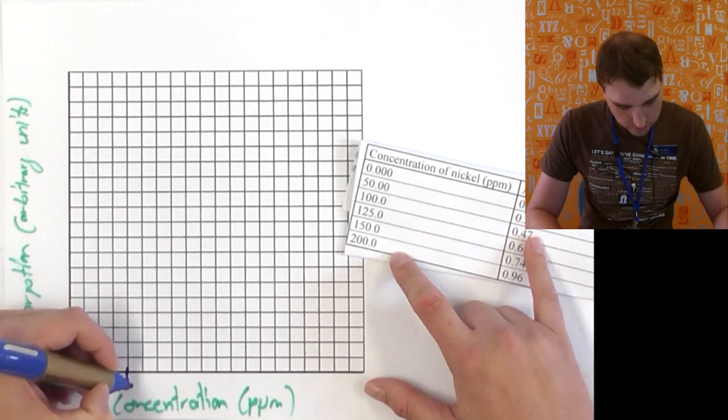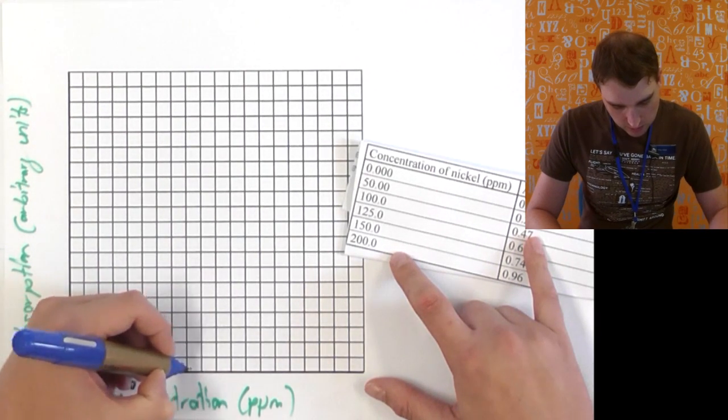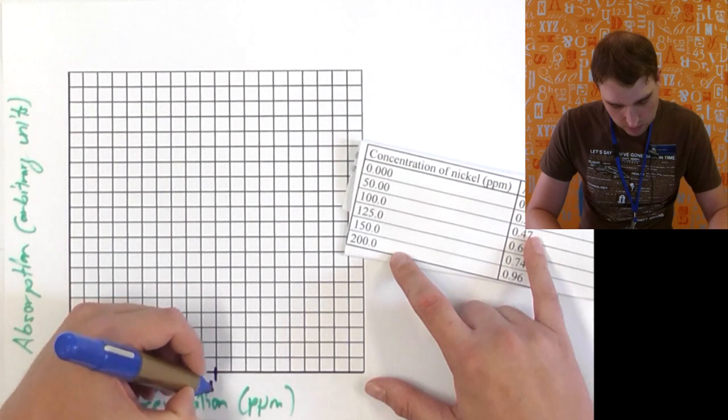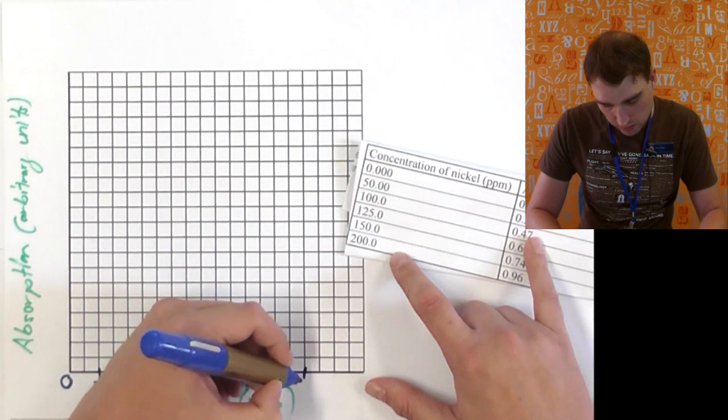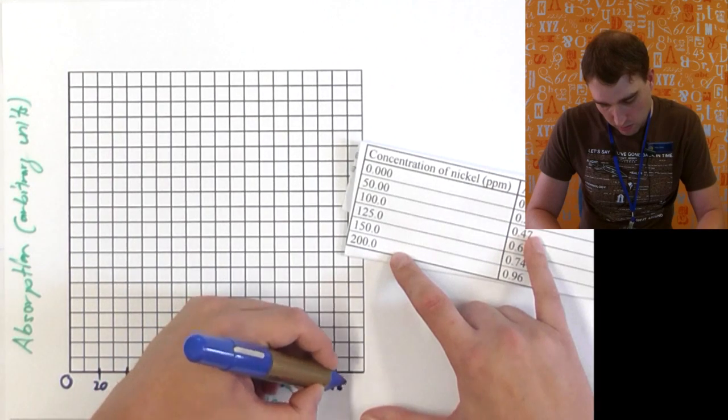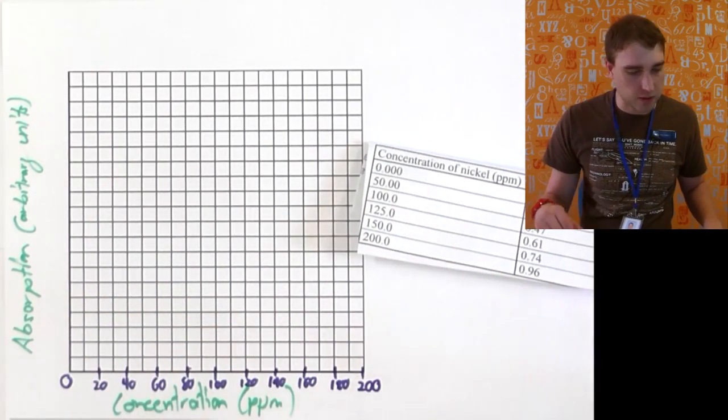So each two is going to be 20, 40, 60, 80, 100, 120, 140. So I can just fit that in on this graph.